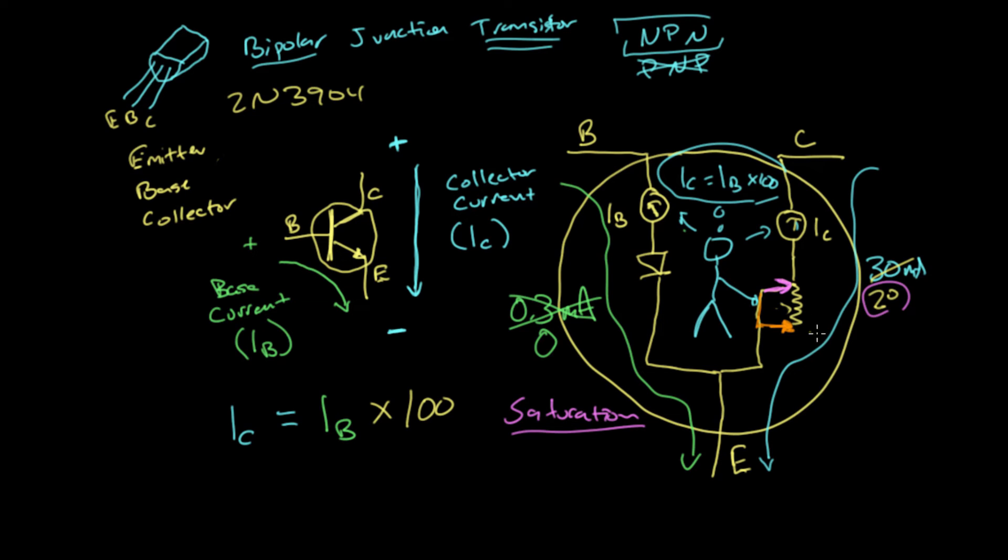Not cut off, cutoff. So the transistor is in cutoff. Down here, the transistor is basically not passing any current from the collector to the emitter.